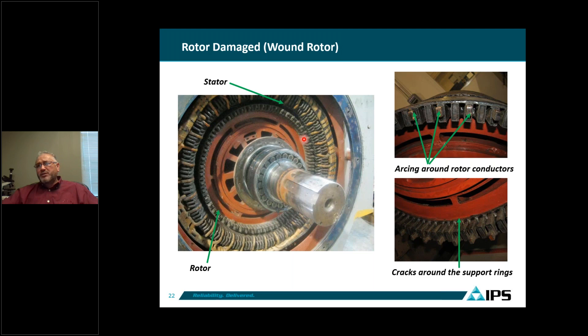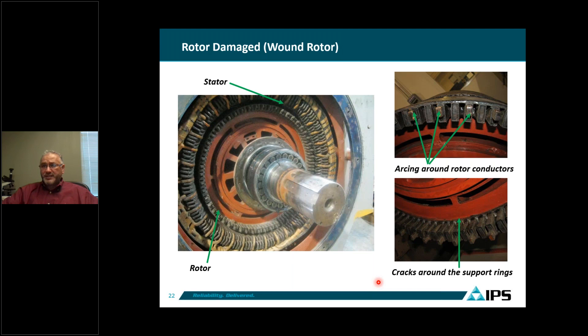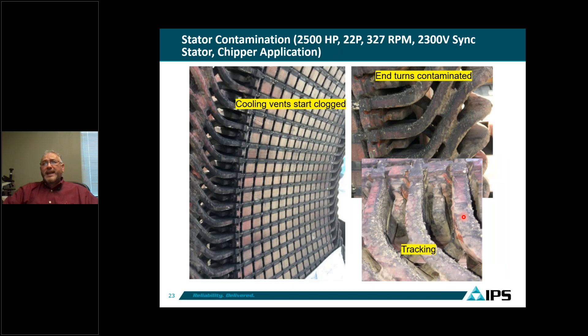For wound rotor motors, we see arcing around the conductors and cracks due to mechanical motion. Even though the secondary resistor absorbs the starting energy, the mechanical torque impacts in our applications are very large — all the torque passes through the air gap to the rotor and through the spider. We see cracks around support rings in wound rotor machines. This is something that must be inspected when maintaining wound rotor motors.